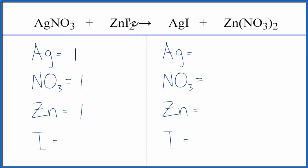one zinc, two of these iodine atoms. On the product side, one silver, two nitrate NO3 ions, one zinc, and one iodide.